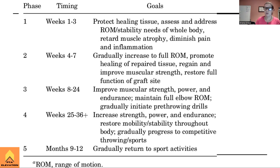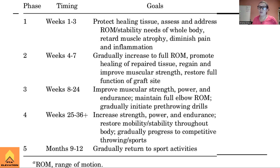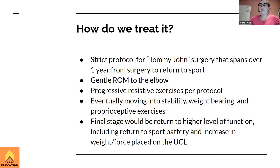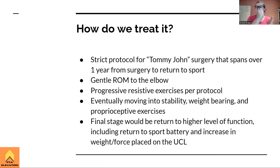At nine months, you safely begin adding return-to-sport activities. The overall progression is: acute pain management, gentle ROM, tissue repair, restoring full ROM, strengthening, higher-level strength and power and endurance, stability, and then return to sport. This is the general rule of thumb for pretty much any surgical repair: eliminate pain, restore range of motion, restore strength, refine that strength, work on stability, and return to function.